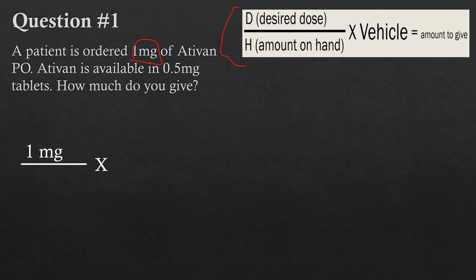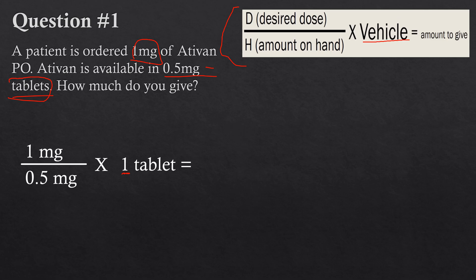How much do we have available on hand? The question tells you it's available in 0.5 milligram tablets, so that's what we have on hand — 0.5 milligrams goes on the bottom. Now for the vehicle: for tablet questions it's a little more straightforward, because it's 0.5 milligrams per every single tablet, so the vehicle is one tablet. We'll specify one tablet because this will work much better when we move into volume-related questions.